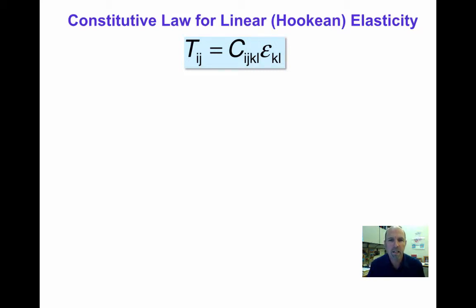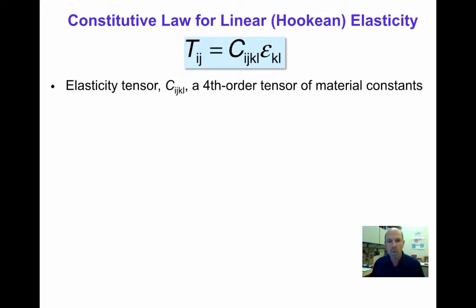Welcome back to BE110. Today we're going to look at some applications and limitations of the constitutive law for linear Hookean elasticity. Recall that in general, the linear Hookean constitutive equation for the stress Tij as a function of the Cauchy strain components epsilon_kl is Tij equals Cijkl epsilon_kl, where Cijkl is a component of the fourth order elasticity tensor. For a general linear stress-strain relation, these components would be constants.